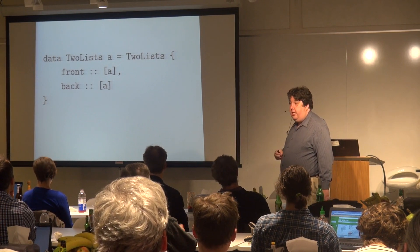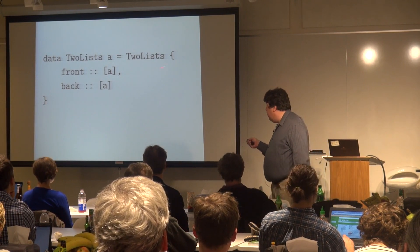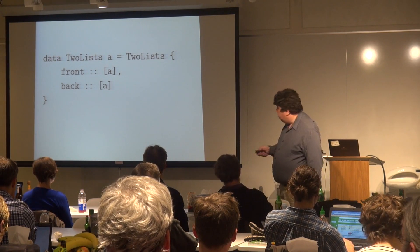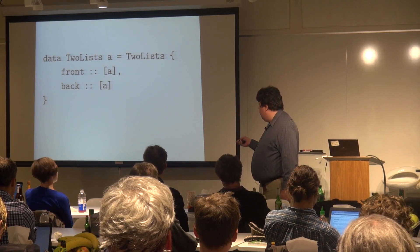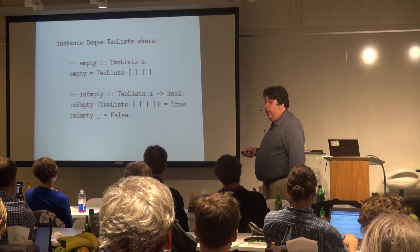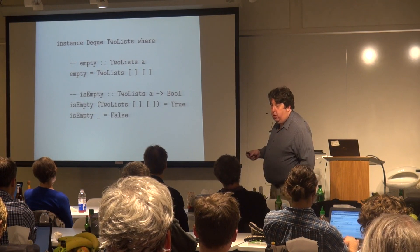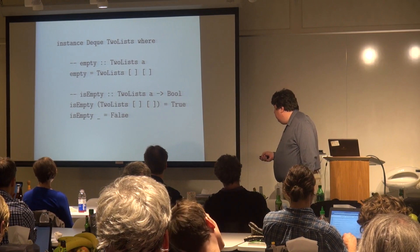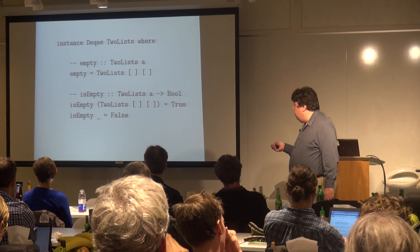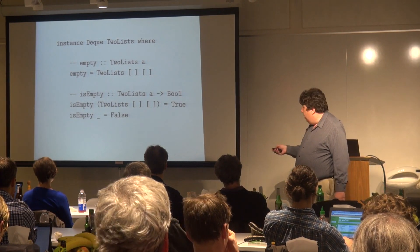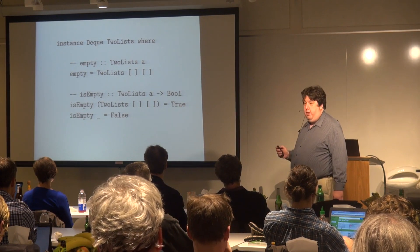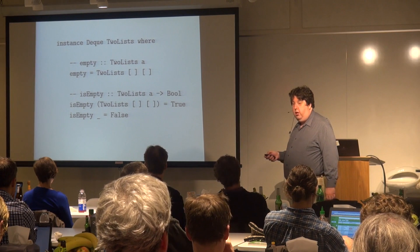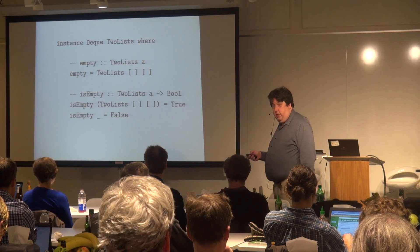Defining this data structure is very simple — we just have a structure with two elements: front and back. Creating an empty one: both lists are just empty. If both lists are empty, the whole thing is empty; if either list is not empty, the whole DQ is not empty.